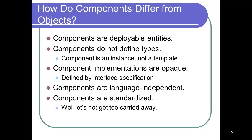How do components differ from objects? Components are deployable entities — they do not define types, they are instances, not templates. Component implementations are opaque, meaning you can't see or modify the internal structure or code. They are defined by their interface specification. Components are language independent and should be standardized.